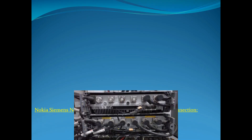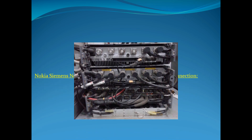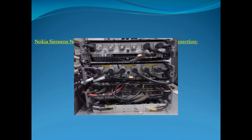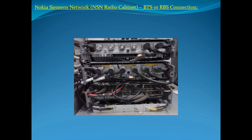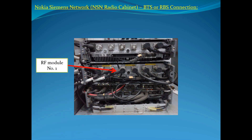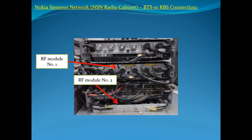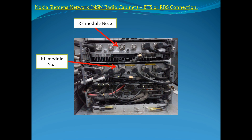Nokia Siemens Network, NSN Radio Cabinet — BTS or RBS Connection. The cabinet contains RF Module No. 1, RF Module No. 2, System Module, and Transmission Module.